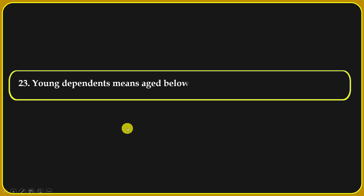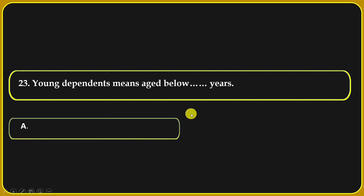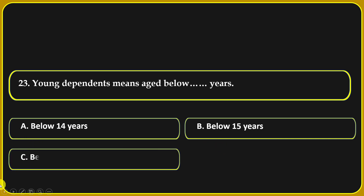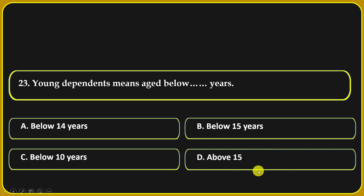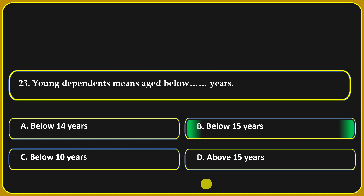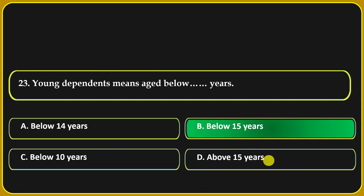Young dependents means aged below: 10 years, 14 years, 15 years, or 10 years. Below 15 years is the correct answer.